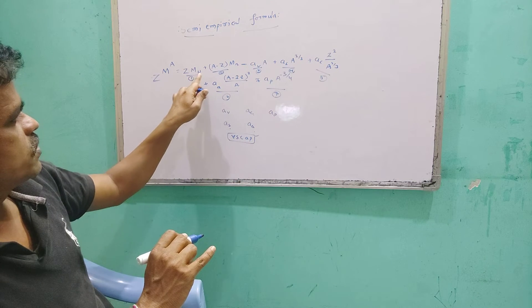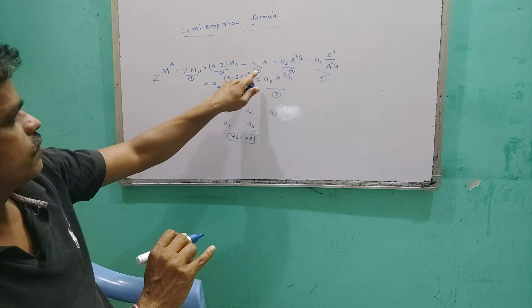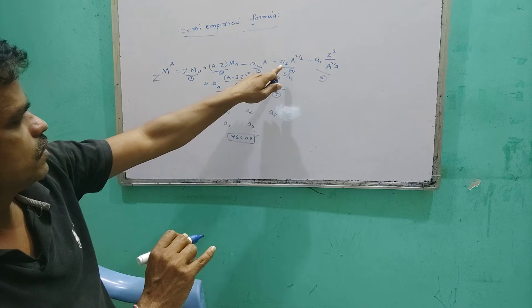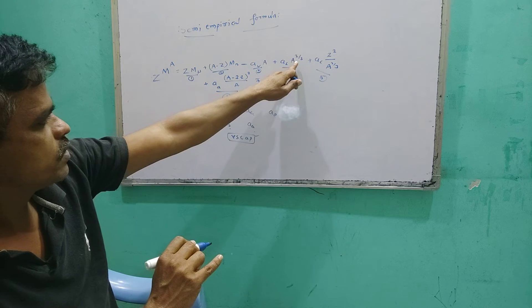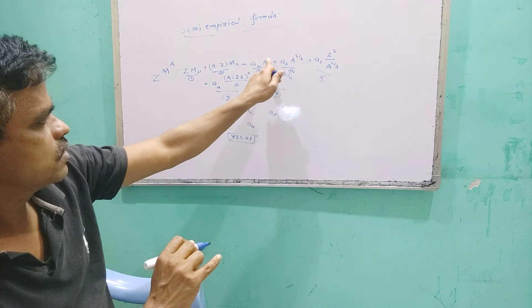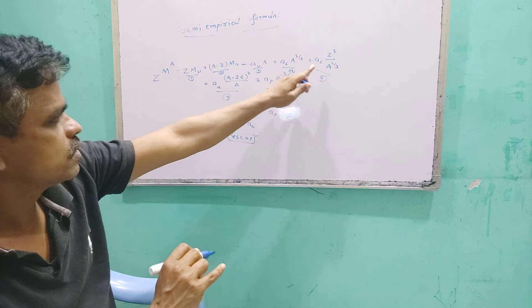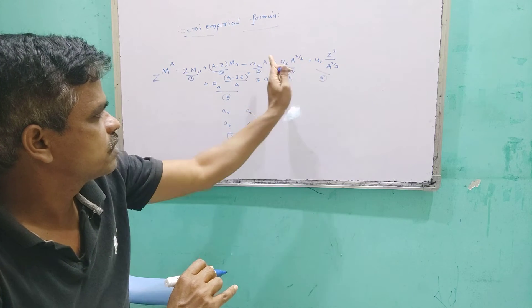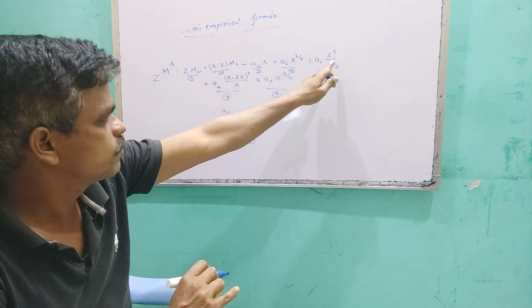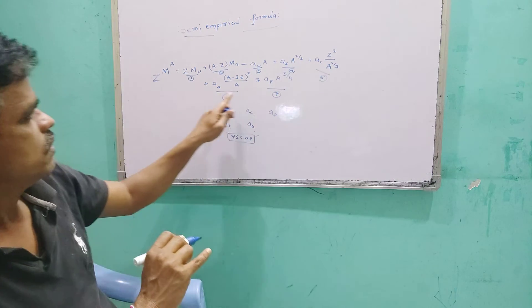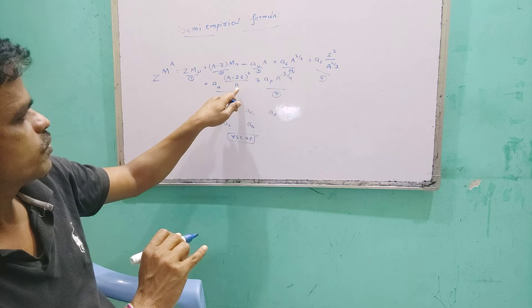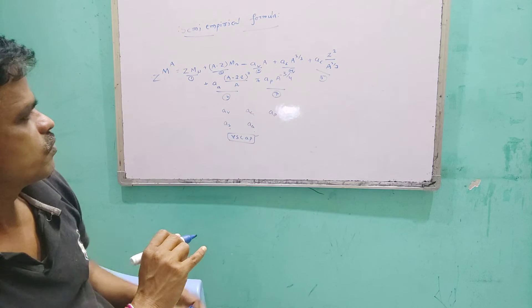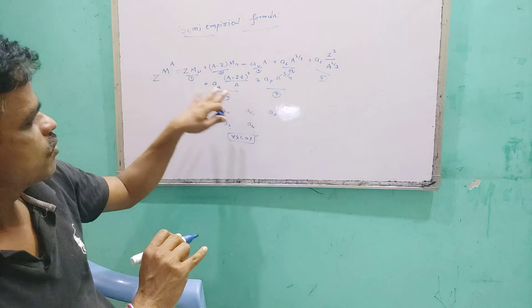So first term is ZMH, then (A minus Z)MN, then AV - the volume term - AV times A. For symmetry, the power is A^(2/3). For the symmetry term AS, here the power is 2/3.